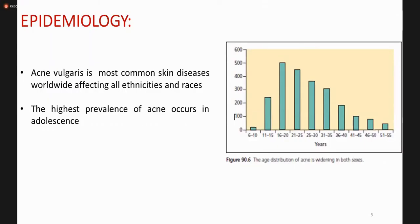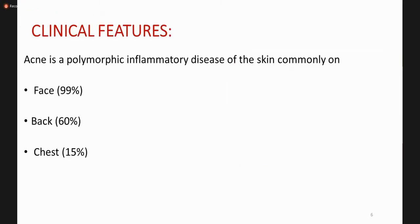Acne vulgaris is the most common skin condition affecting all ethnicities and races, with the highest prevalence seen in adolescence. Sites: mostly the face (99%), then back and chest. It is a polymorphic inflammatory disease — you can see different types of lesions: comedones, papules, pustules, nodules, cysts, macular scars, and scarring.